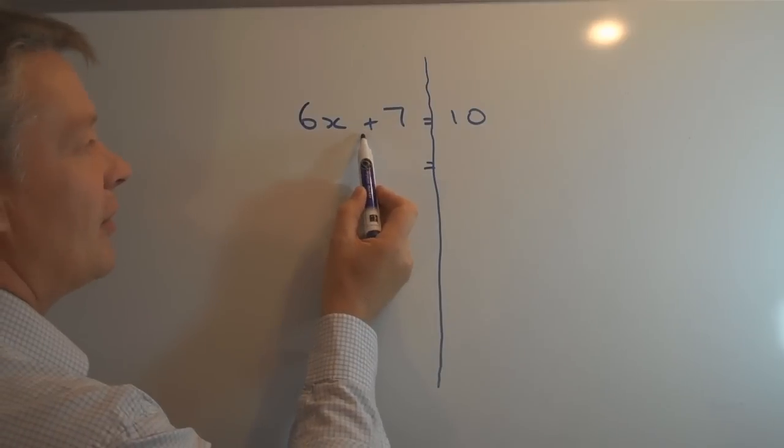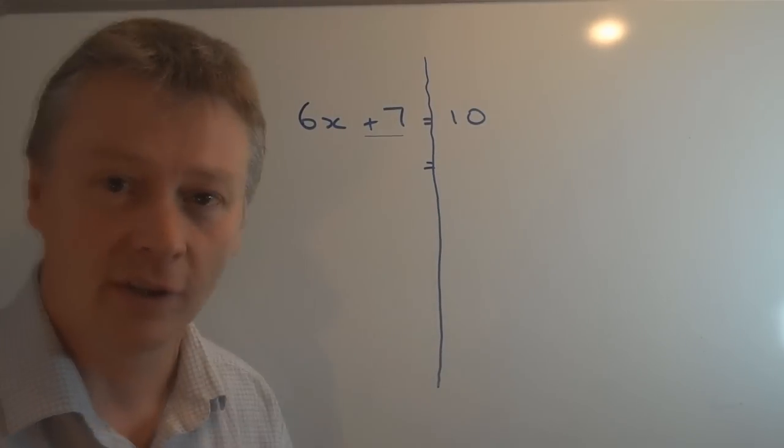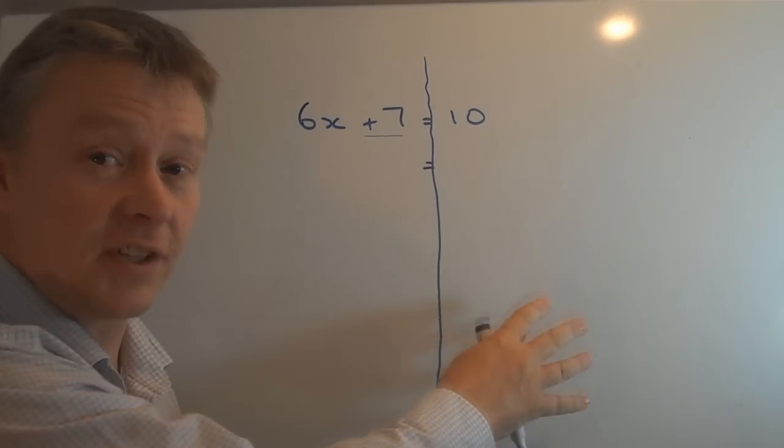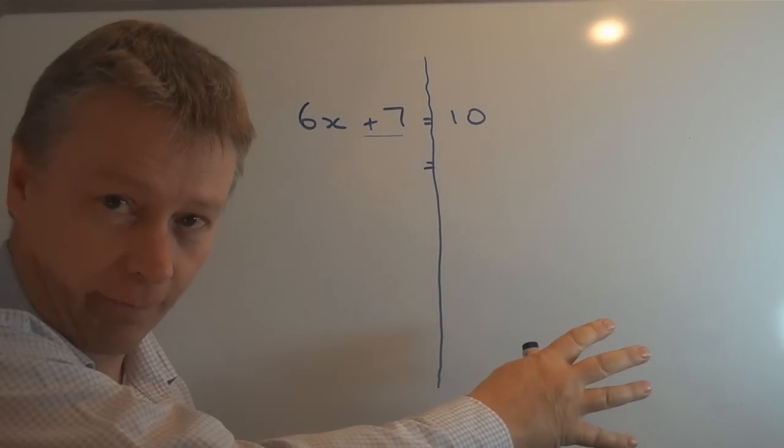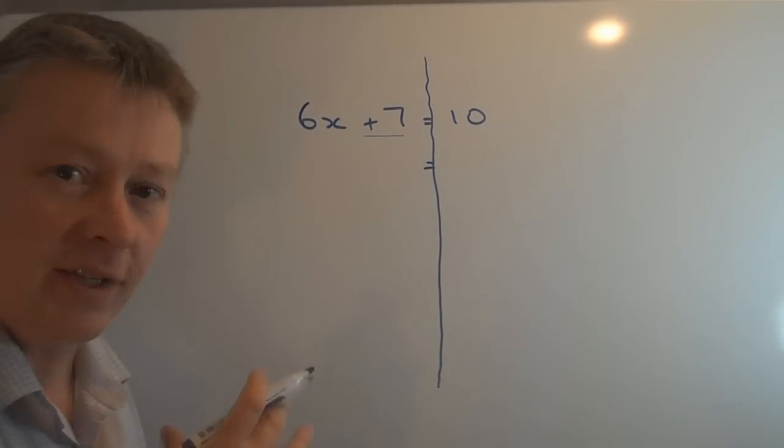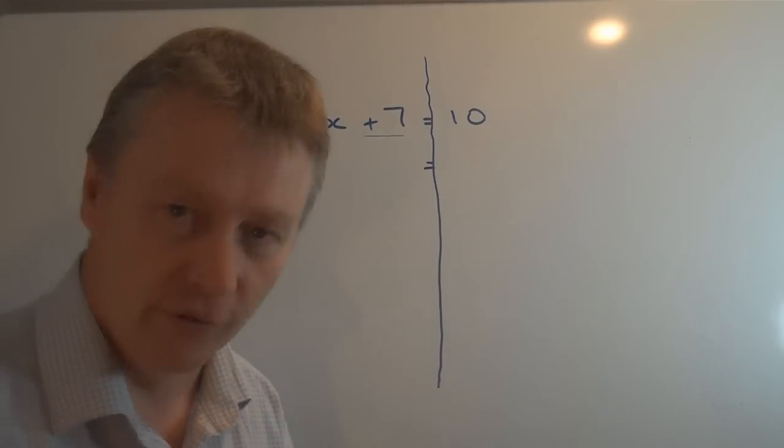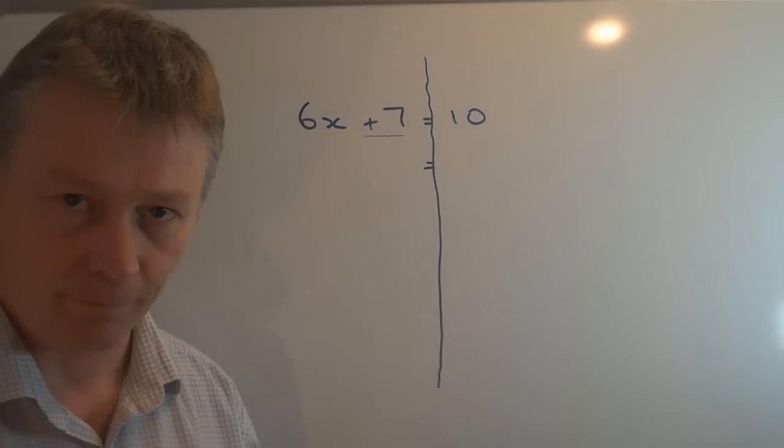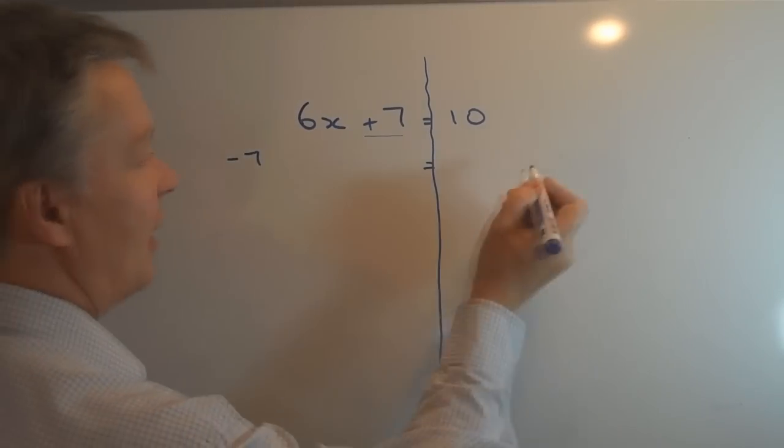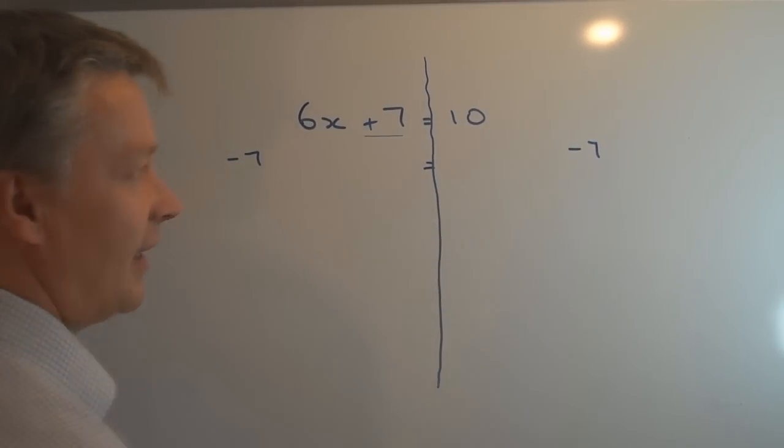Here I have a positive seven value, and that positive seven value I want to be on the right hand side. So what I'm going to do is take away seven from both sides of the equation. That means if I take away seven at this side and take away seven at that side.